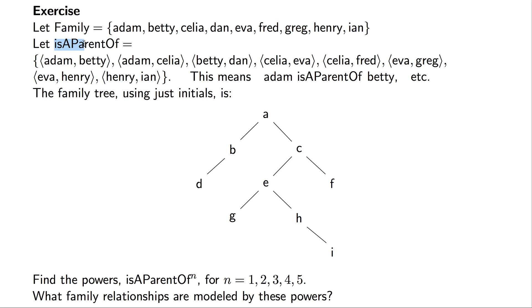We define a binary relation where Adam is a parent of Betty, Adam is a parent of Celia, Betty is a parent of Dan, and so on.